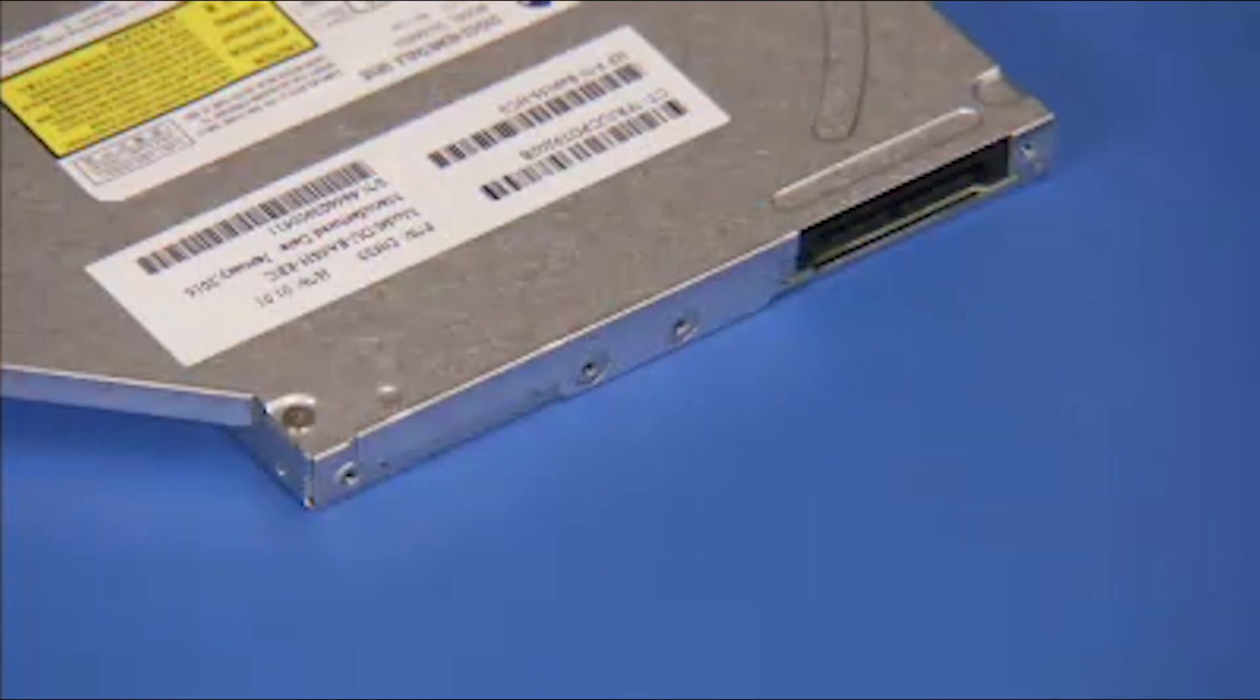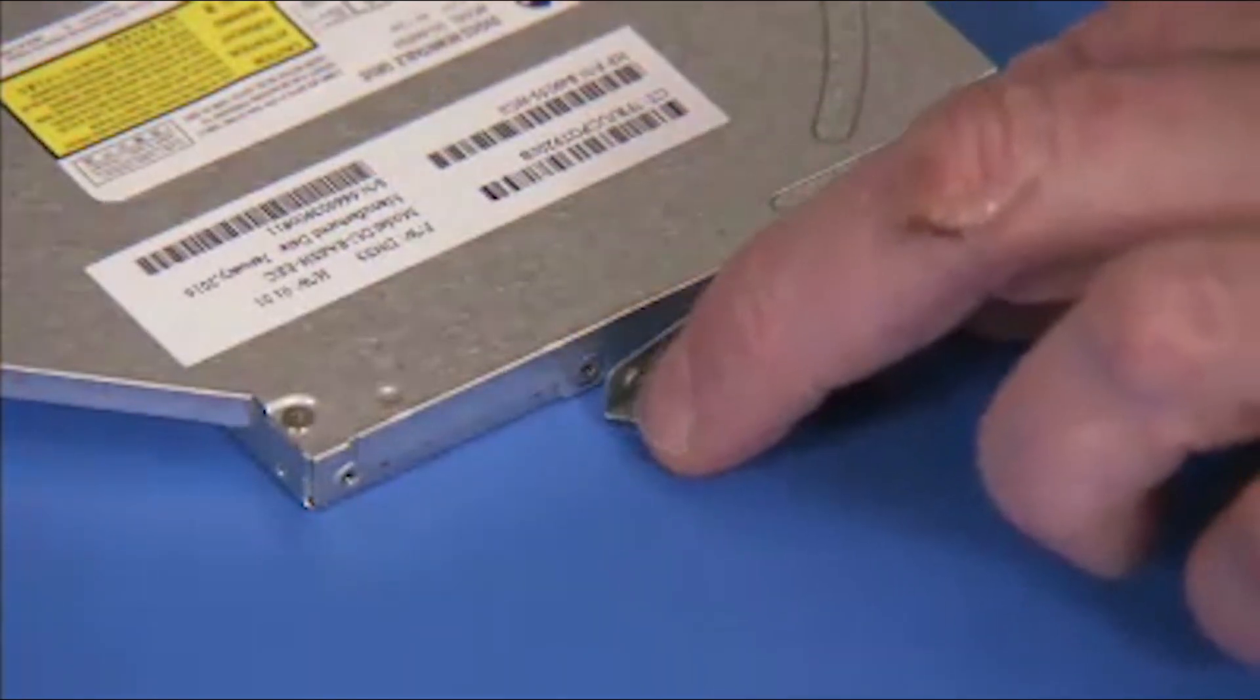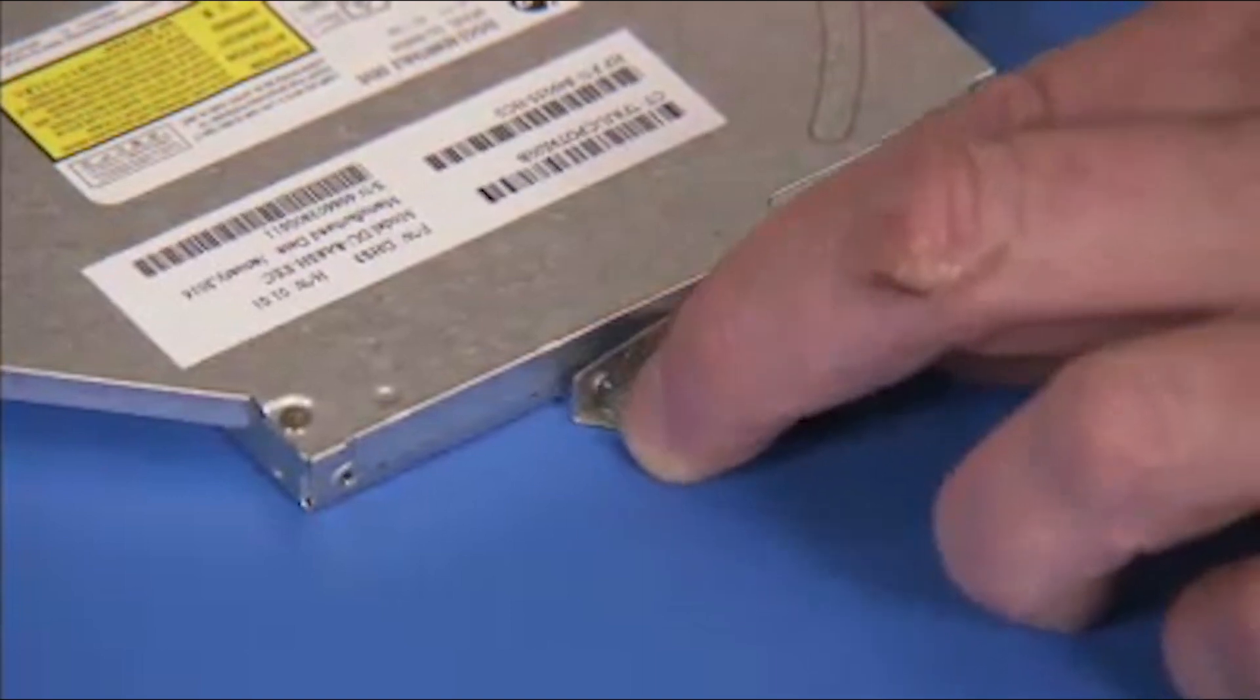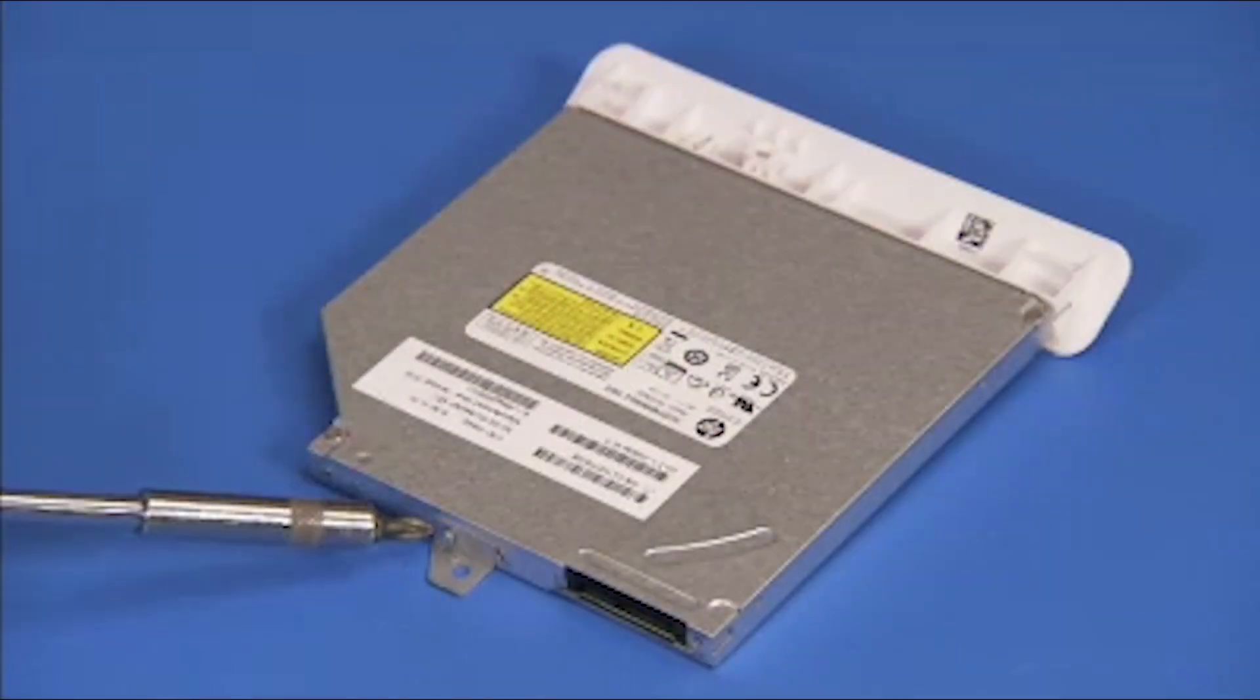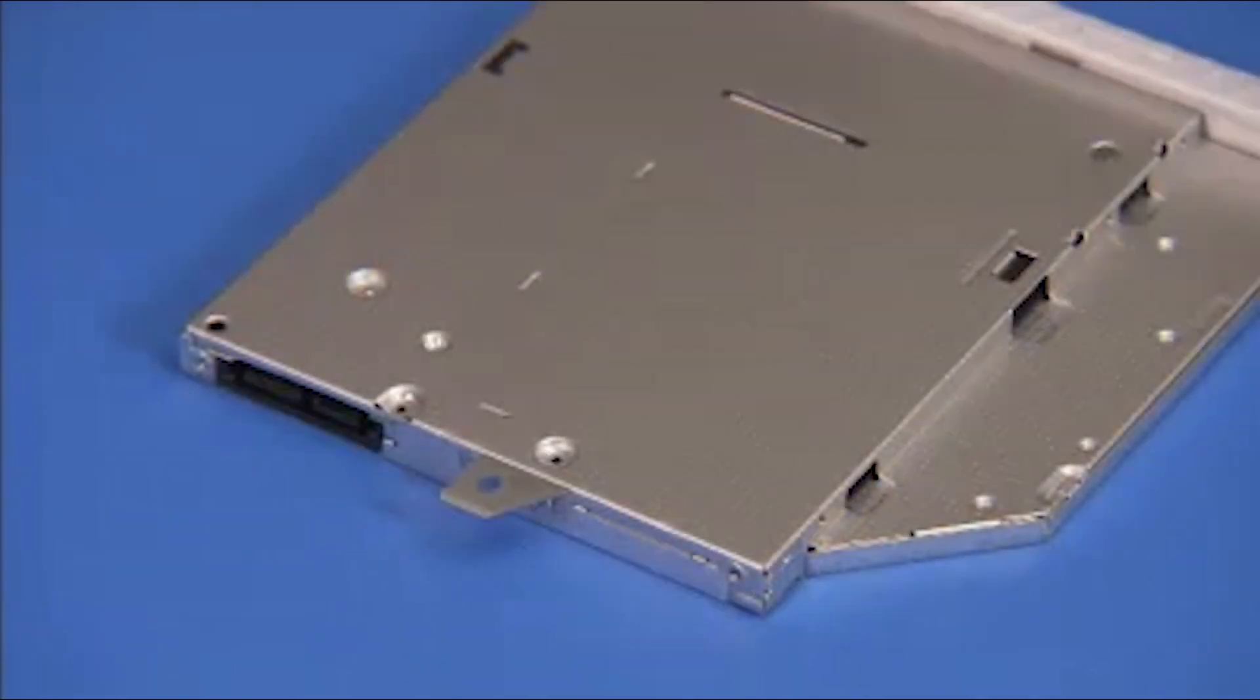Secure the bracket to the rear of the drive with its Phillips No. 1 screw at the rear of the bracket. Make sure the bottom flat part of the bracket is aligned with the unlabeled side of the optical drive.